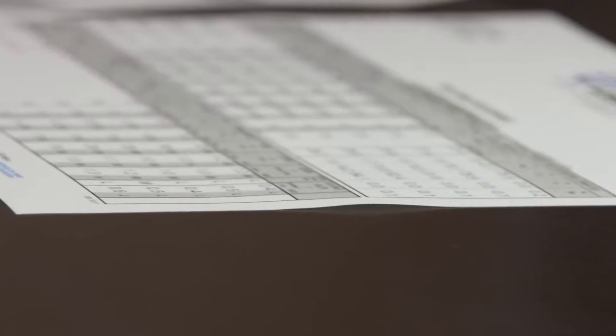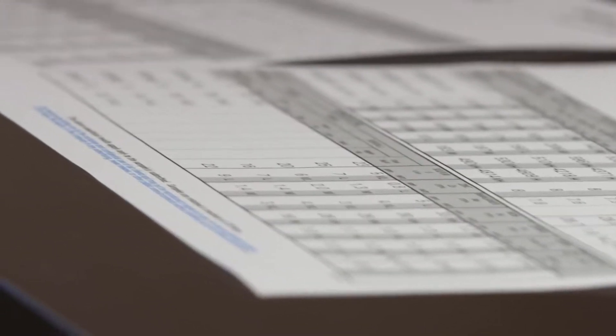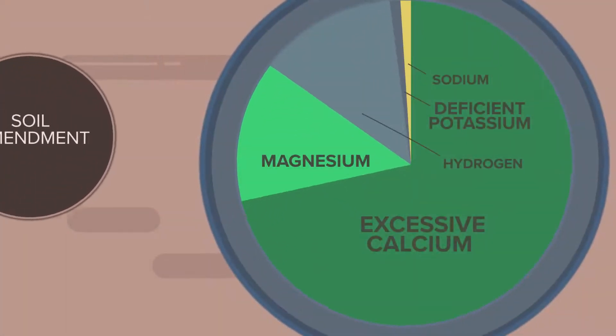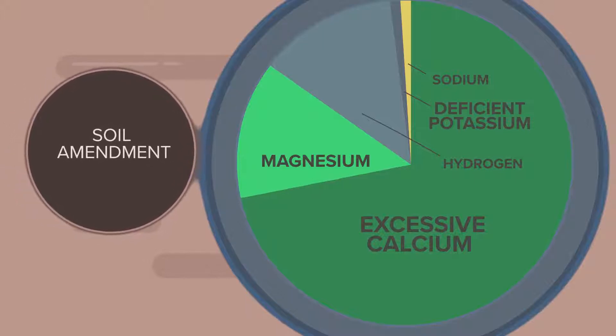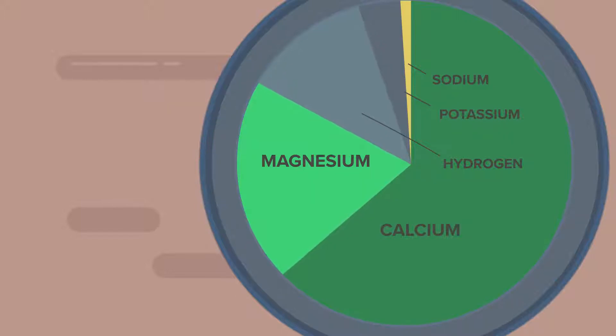When your soil base saturation gets out of balance, there are numerous amendments you can add to your soil to correct that imbalance. We've talked about percent base saturation and the fact that calcium, magnesium, sodium, and possibly hydrogen might be out of whack at some point in time. There are ways you can go ahead and adjust that by applying different soil amendments — something to change that percent base saturation to better balance your soil.